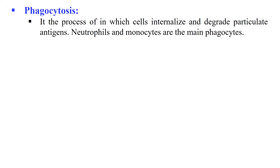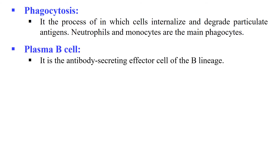Phagocytosis is a process by which a phagocytic cell engulfs the pathogen and kills, neutralizes, or degrades the antigen. The neutrophils and monocytes are the main phagocytic cells. Plasma B Cell — the B cell which secretes antibodies — is known as a plasma B cell. Whenever a B cell recognizes a pathogen, it produces memory B cells and plasma B cells, and the plasma B cells secrete antibodies that ultimately kill the pathogen.